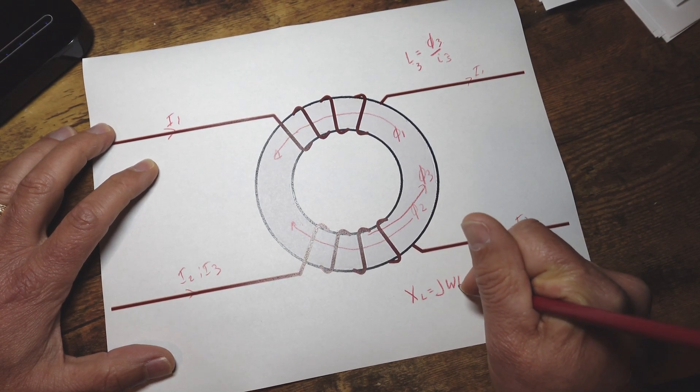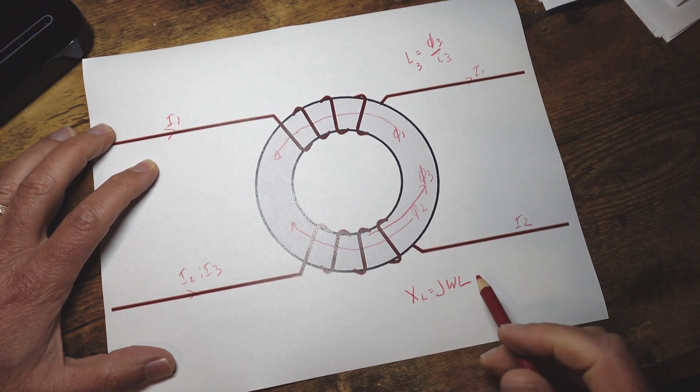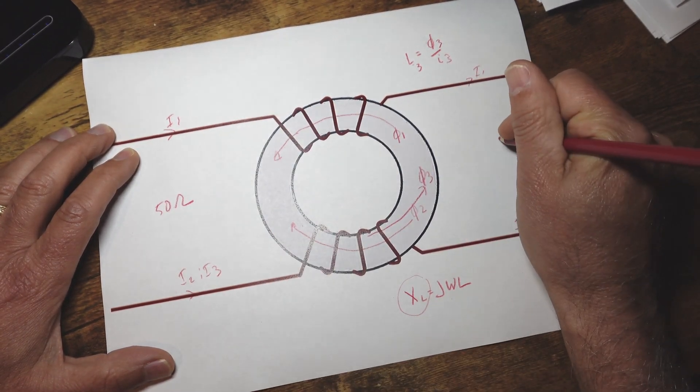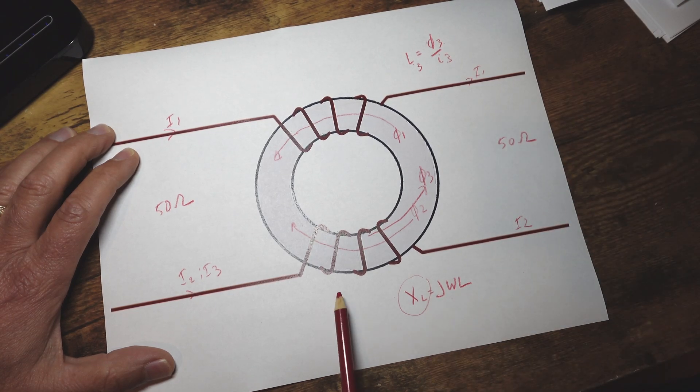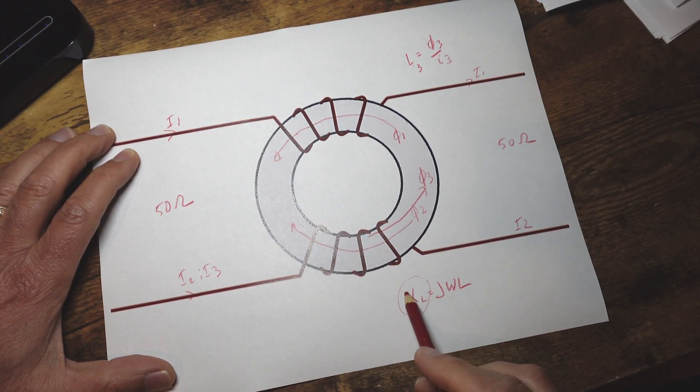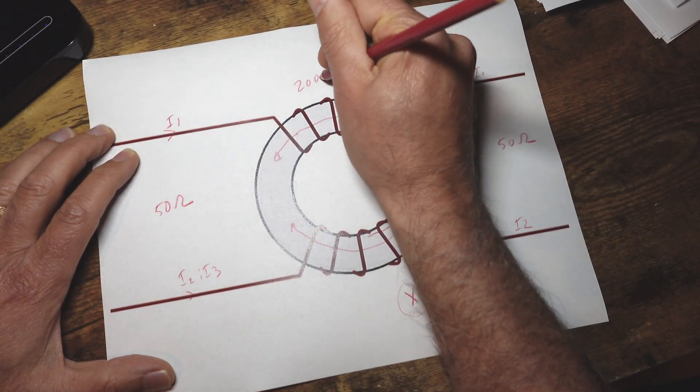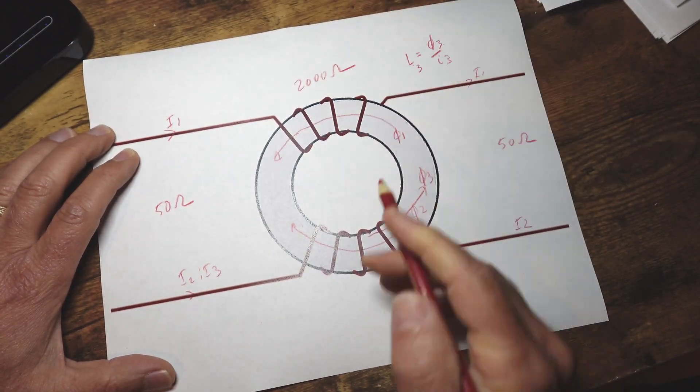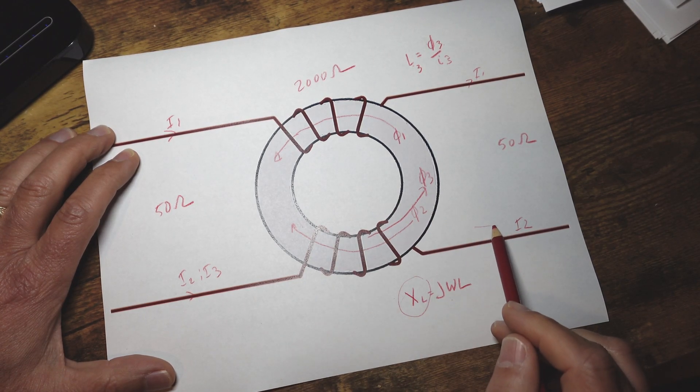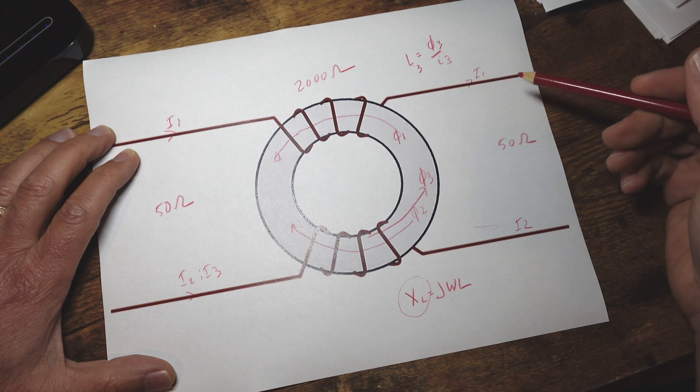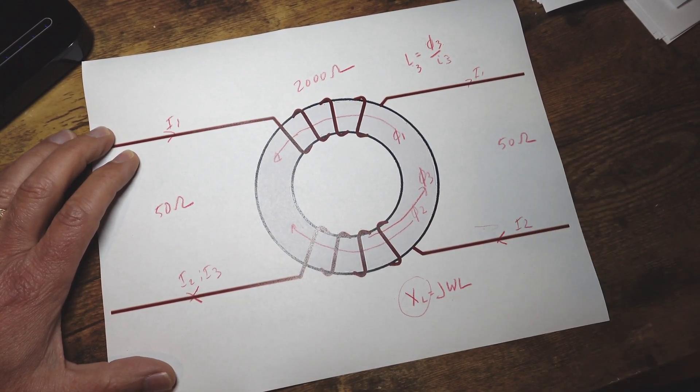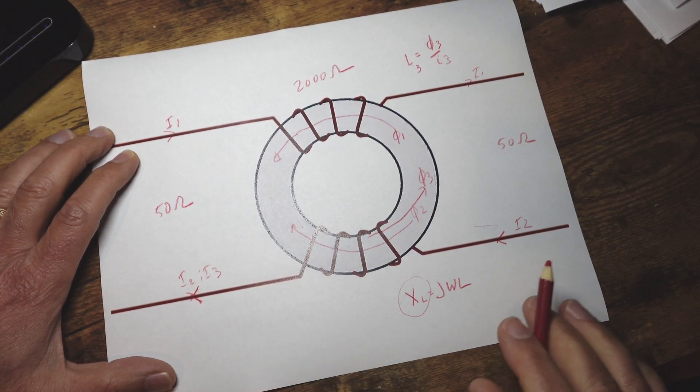Now this is a 50 ohm system and it turns out that when you design these things you want the reactance to be on the order of thousands of ohms and now you have a really nice attenuation and I3 is not going to go through here and you're left with I1 and I2. Sorry the directions here are supposed to be opposite so that is the way this works.